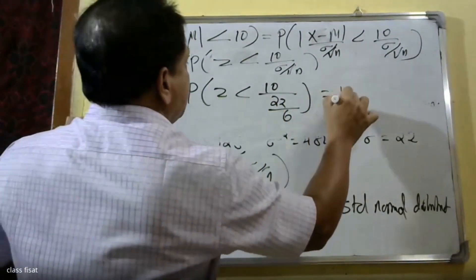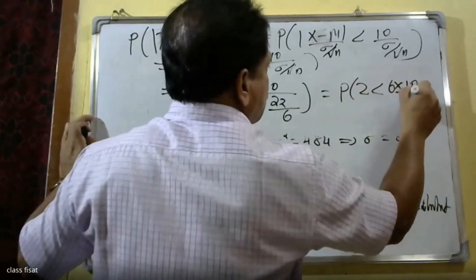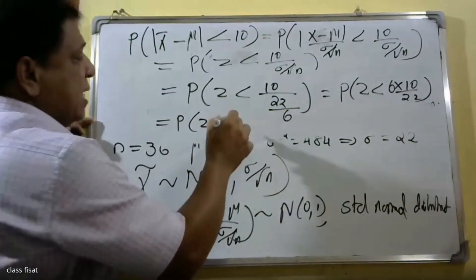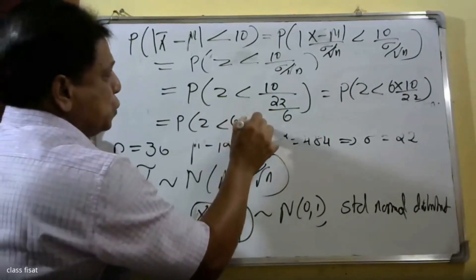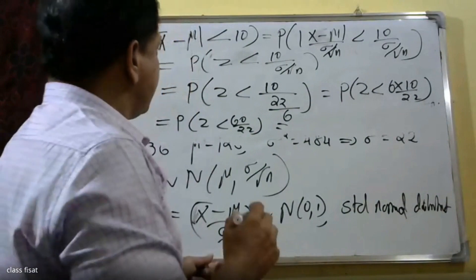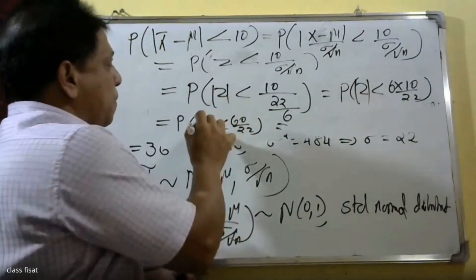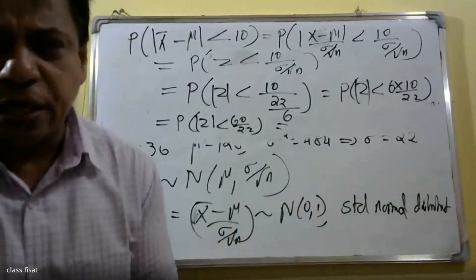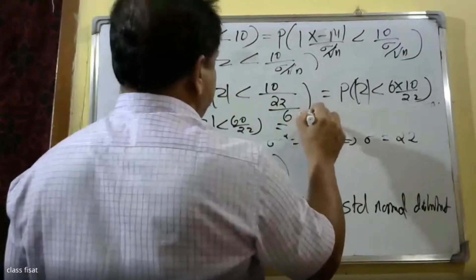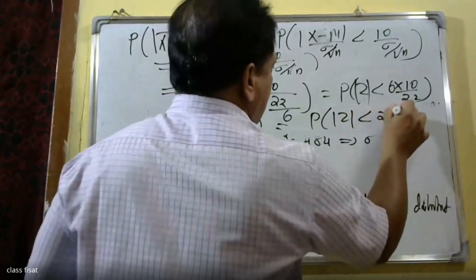The probability of |z| less than 10 divided by (22 divided by root of 36). That is probability of |z| less than 60 divided by 22. The value is 2.73, so probability of |z| less than 2.73.